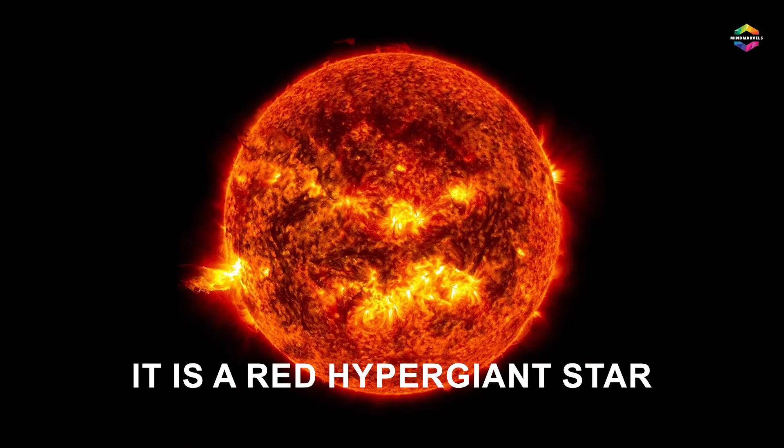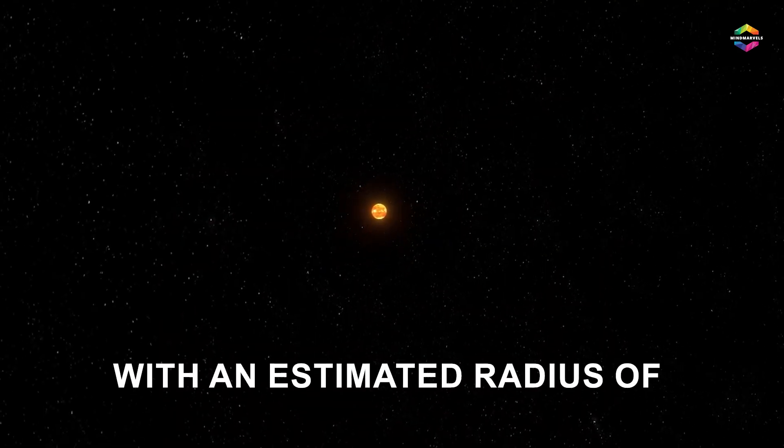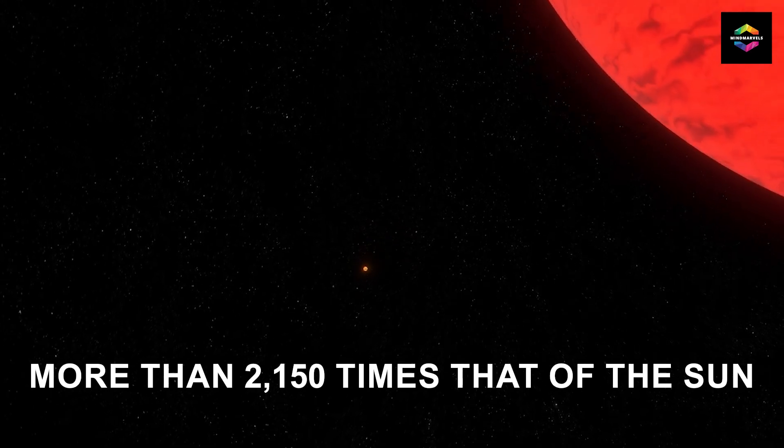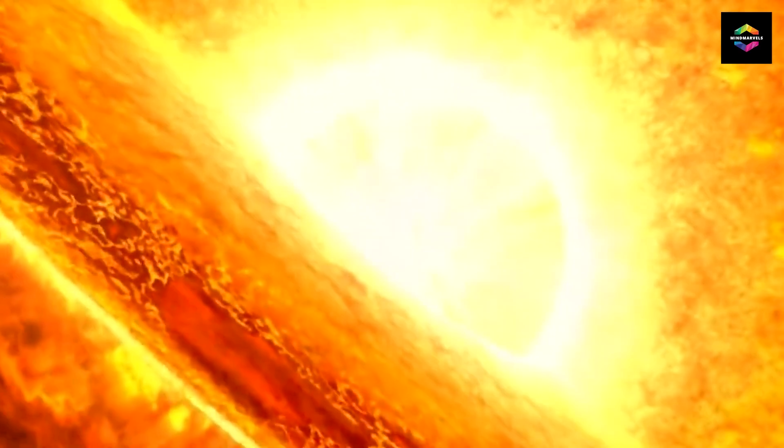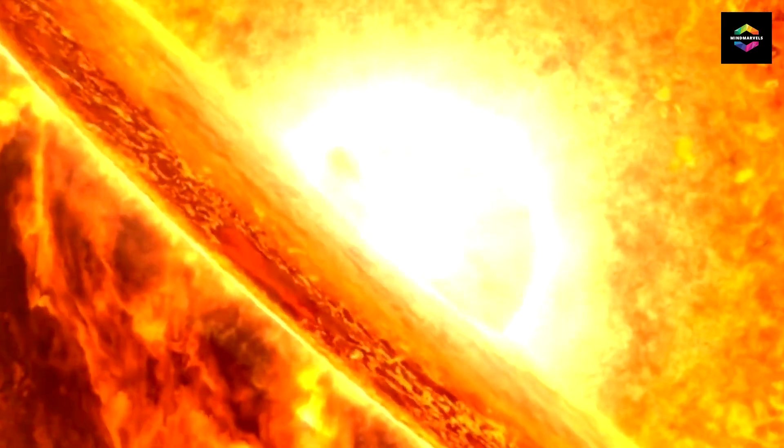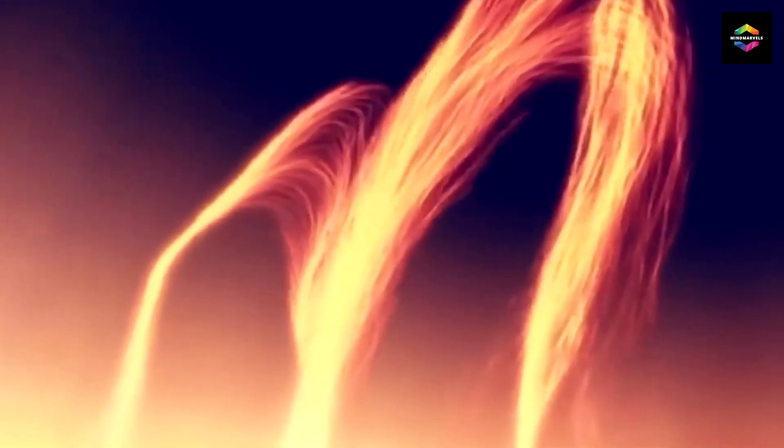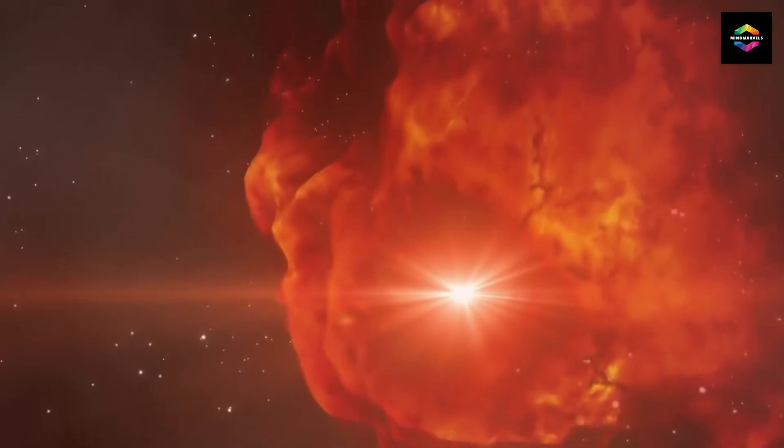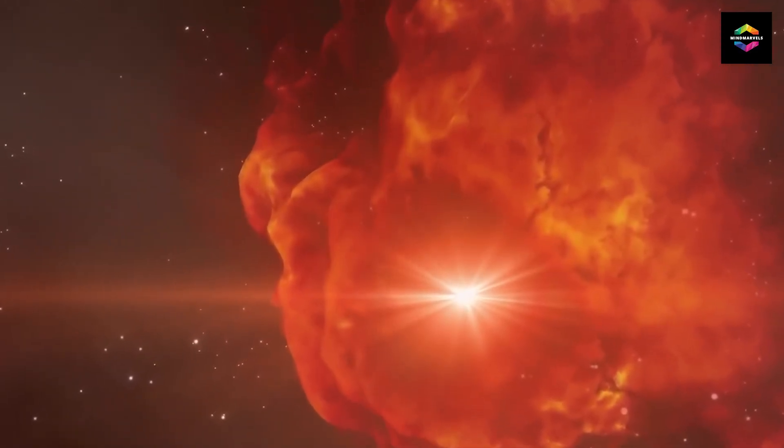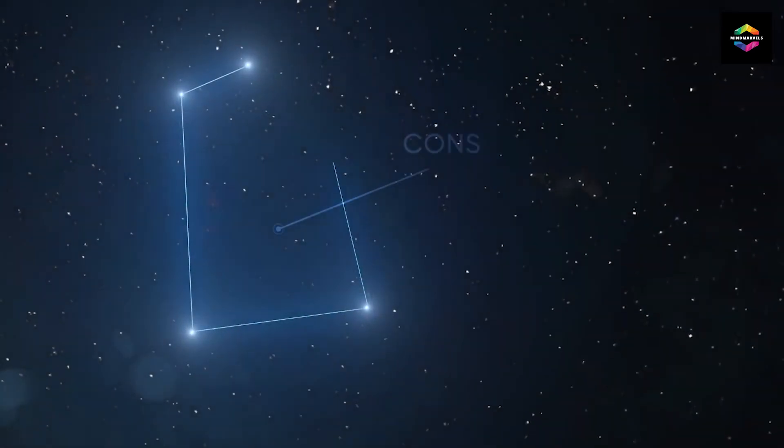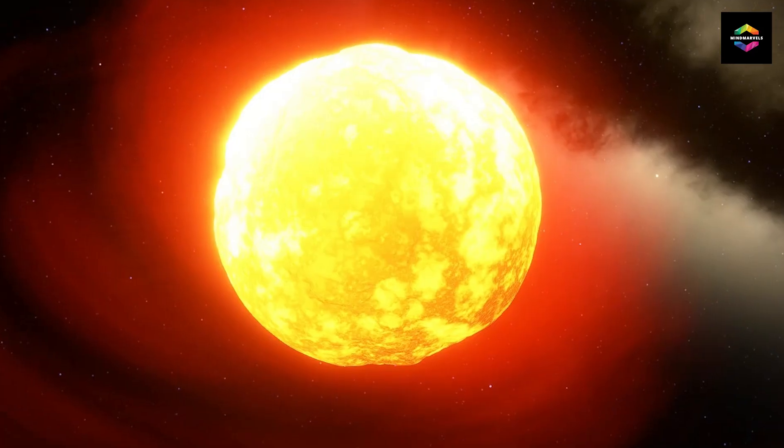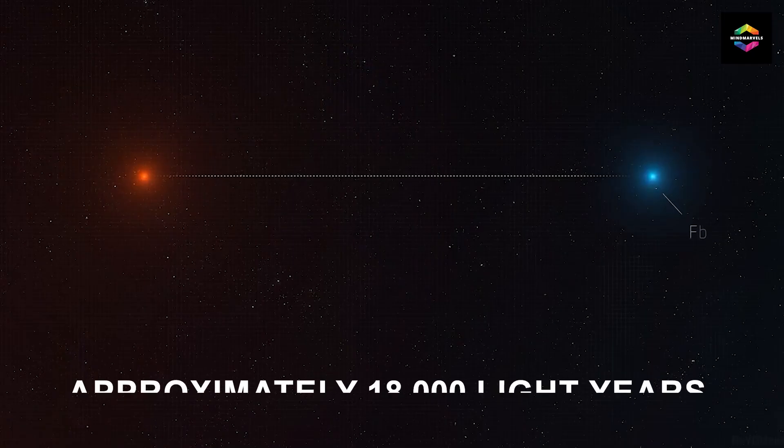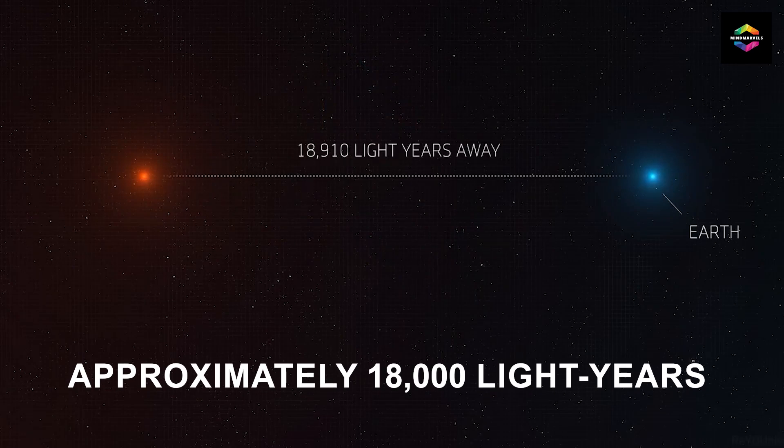It is a red hypergiant star with an estimated radius of more than 2,150 times that of the Sun. The immense size of Stevenson 2-18, as well as other giant stars, is due to the intense pressure and temperature at their cores, which causes them to expand and create a large envelope of hot gas. This star is really bright and releases a lot of energy into space. Situated in the Scutum constellation, Stevenson 2-18 is approximately 18,000 light years away from Earth.